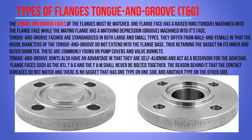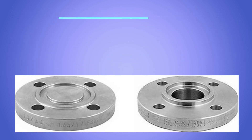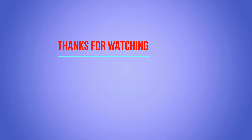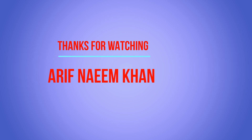Tongue and groove joints also have the advantage of being self-aligning and acting as a reservoir for adhesives. Flange faces such as RTJ, tongue and groove, and male and female shall never be bolted together, because the contact surfaces do not match and there is no gasket that has one type on one side and another type on the other side. Thanks for watching — this is the basic information about piping flanges.